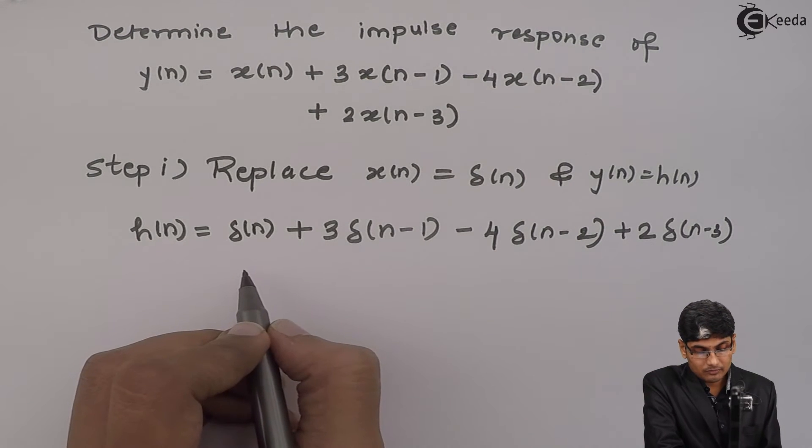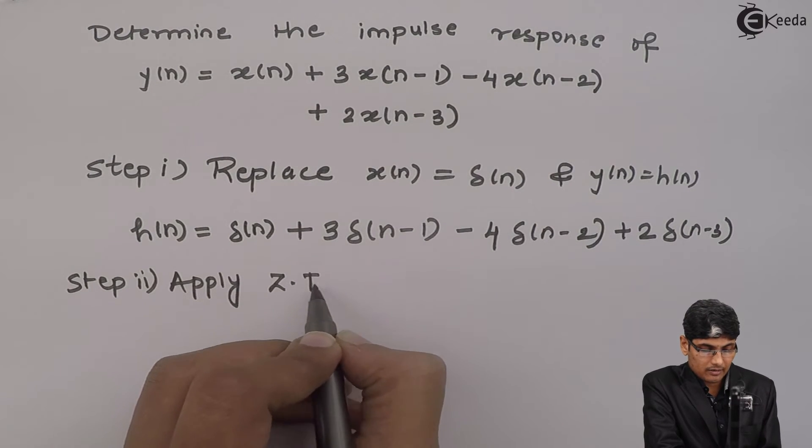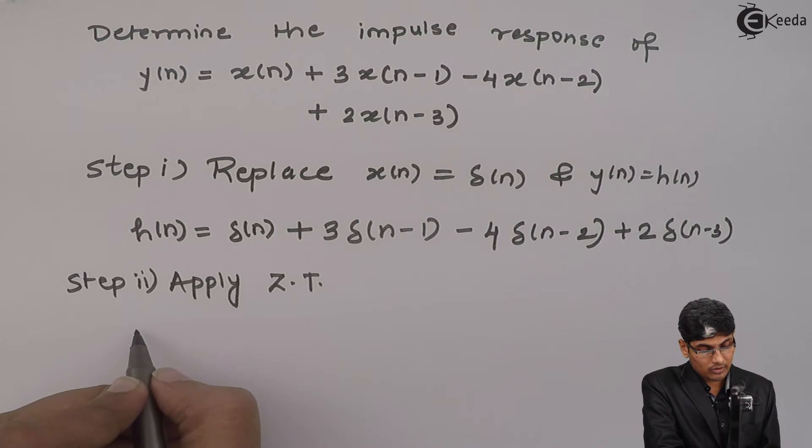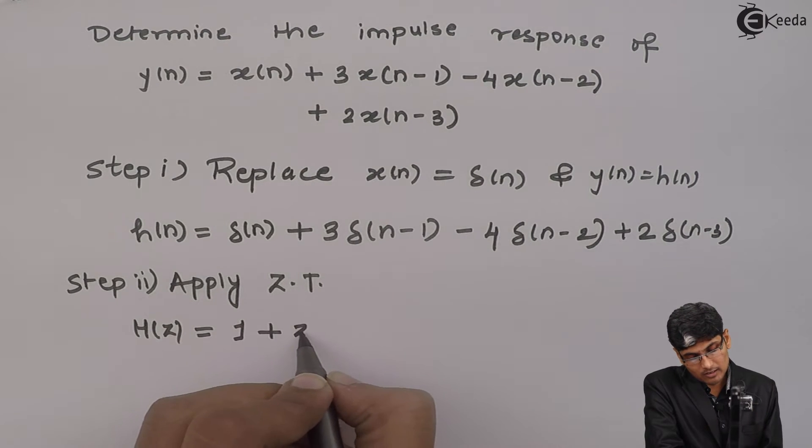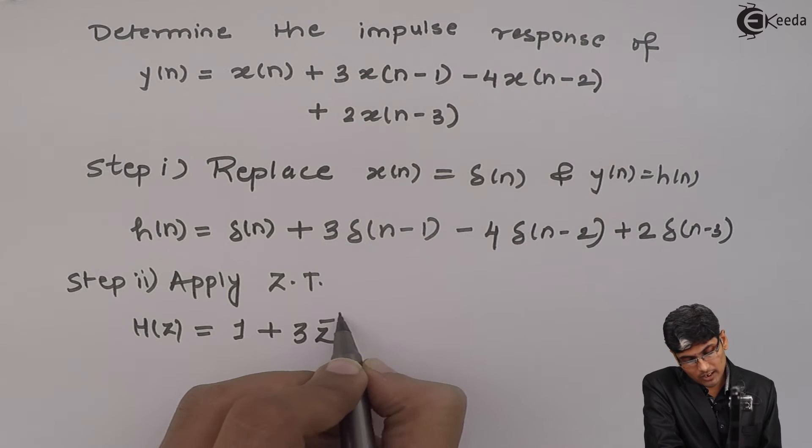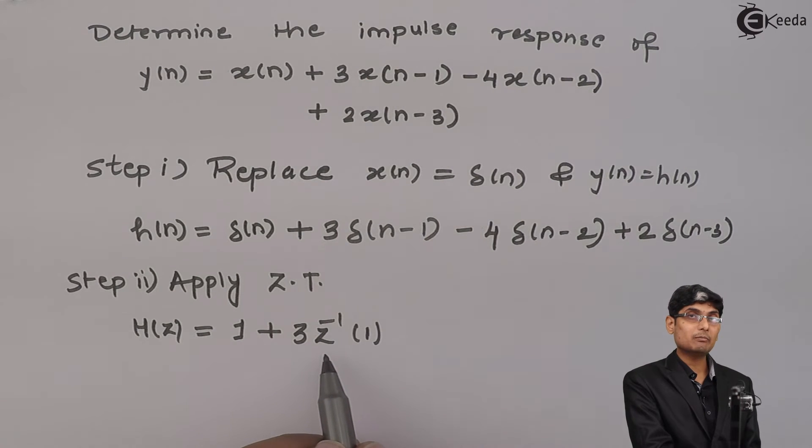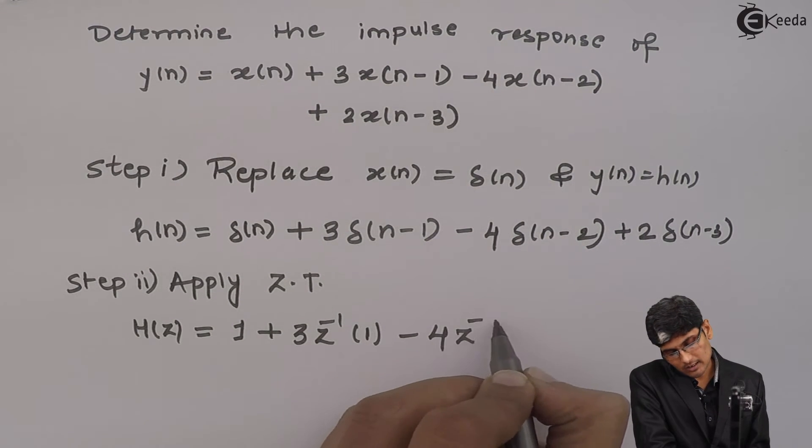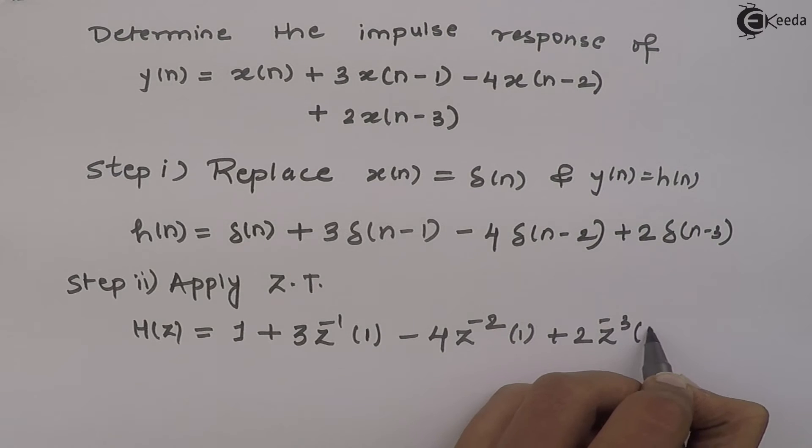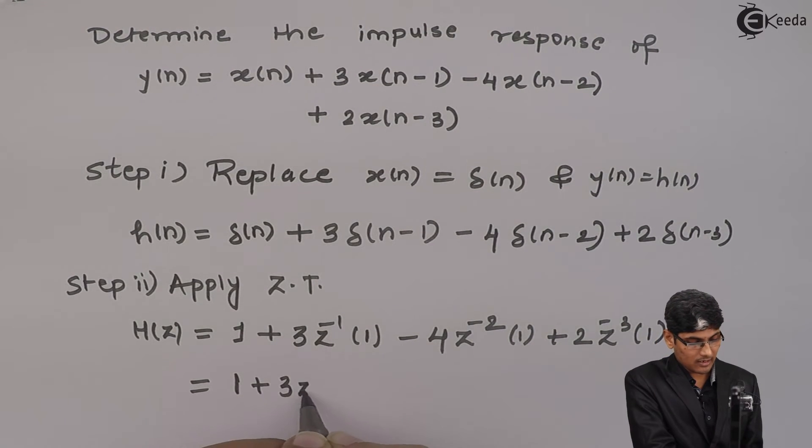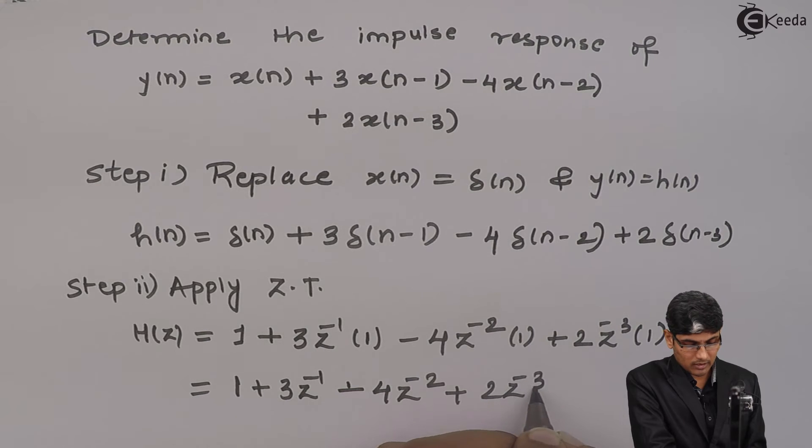Now, I will apply step 2: apply z transform. When I apply z transform to this equation, I get h of z equals to 1 plus 3 z raised to minus 1 because delta n is 1, n minus 1 we are multiplied by z raised to minus 1, minus 4 z raised to minus 2 into 1 plus 2 z raised to minus 3 into 1. So, I have 1 plus 3 z inverse minus 4 z raised to minus 2 plus 2 z raised to minus 3. That is the h of z.